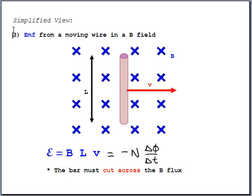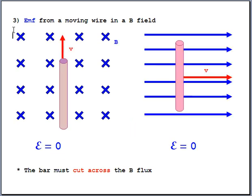You have to be careful about which way you move that bar. The way we're moving it here works great, but there are two ways you could move the bar that won't generate any electricity at all — if you move it in those two directions, it won't be cutting across the magnetic field lines and you won't generate any voltage. It has to cut across the magnetic field — it has to be crossing it like a cross product. That's the only way to generate some voltage.